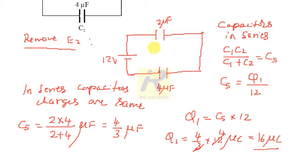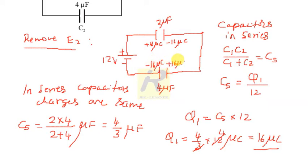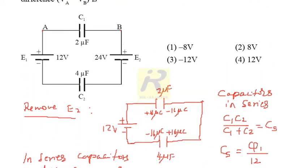So the charge in both capacitors is 16 microcoulombs. On the positive side of the first capacitor we have +16 microcoulombs, and on the other side −16 microcoulombs. Similarly, for the second capacitor: the negative side has −16 microcoulombs and the positive side has +16 microcoulombs. This is the charge distribution when only E1 is present.